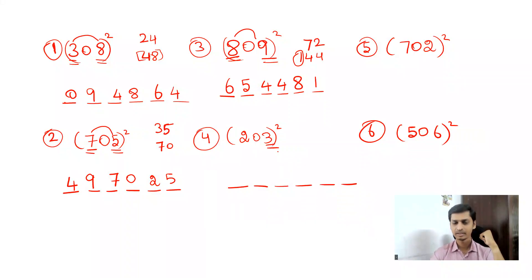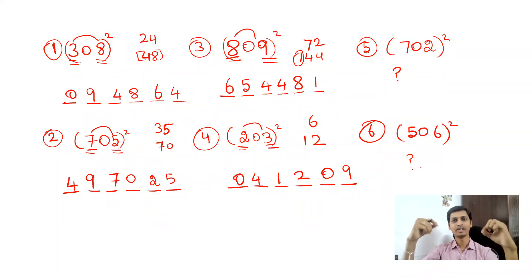What is 3 square? You get 9. If you get a single digit, write it as 09. What is 2 times 3? 6. Double this 6, you get 12. Write that 12 here. Next, what is 2 square? 4. It's a one-digit number, so make it 04. Your answer is 41209.